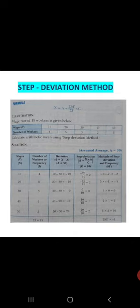Here c is the class interval — the difference between consecutive x values. For example, from 10 to 20, 20 to 30, 30 to 40, 40 to 50, that difference is your c. After finding c, multiply d dash by f to get fd dash, then take sigma fd dash. The formula becomes: mean equals to assume mean plus sigma fd dash upon sigma f into c. Put all values — sigma f, sigma fd dash, and c — into the formula, then do simple multiplication to get your answer.